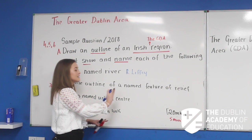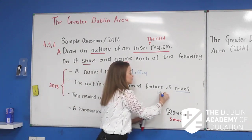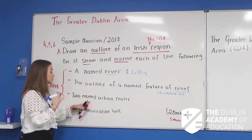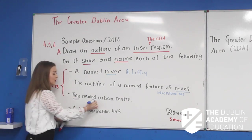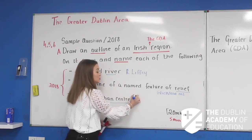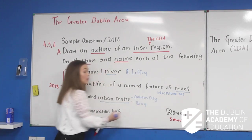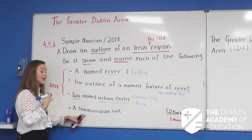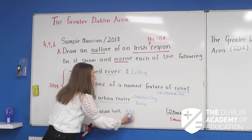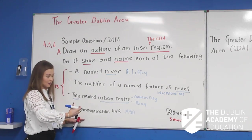The second thing they ask is a named feature of relief. We're going to go for an upland feature of relief — the Wicklow Mountains. Then we're going to go for two urban areas. In 2018 you were asked for two urban centres. The two urban centres we're going to mark on our map are Dublin City and Bray. Finally, our communication link we're going to put in is the M50 motorway. That was not asked in 2018, but it is a possibility — they may say road or rail link.